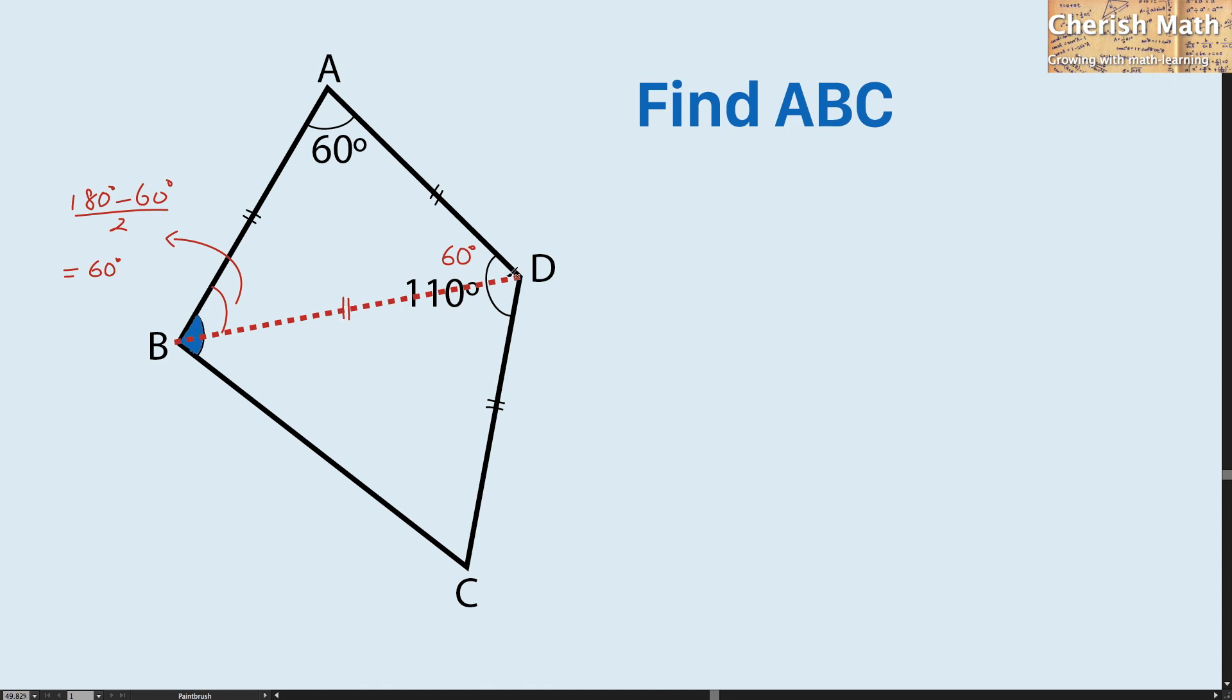For triangle BDC, I'm going to find this angle by using 110 degrees and taking away the 60 degrees on top. That means I get 50 degrees.